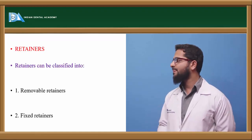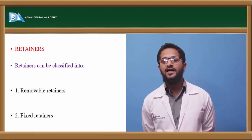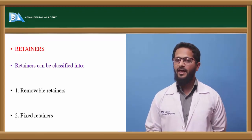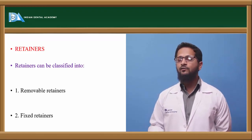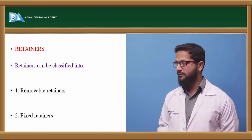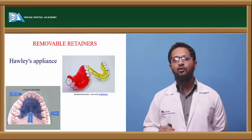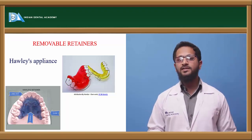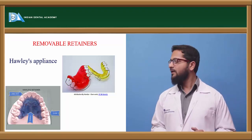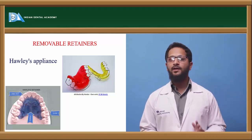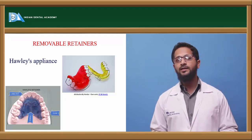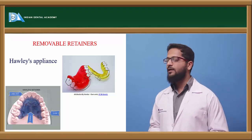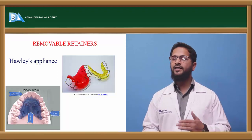Retainers are appliances or devices used to achieve retention. They can be removable or permanent. Removable retainers depend greatly on patient compliance. The first removable retainer is the Hawley appliance, given by Charles Tweed in 1920. It is a simple retainer consisting of Adams clasps on the molars and a labial bow, which can be modified in a number of ways. In an ideal Hawley appliance, the labial bow extends from canine to canine, but it can be modified to extend from premolar to premolar.